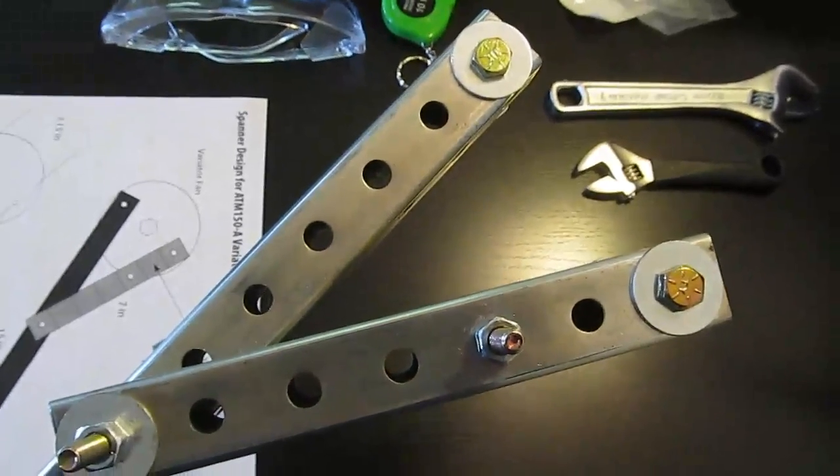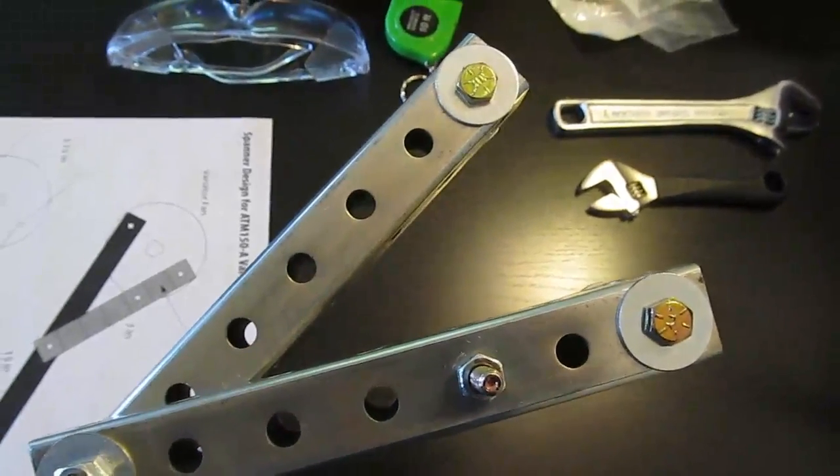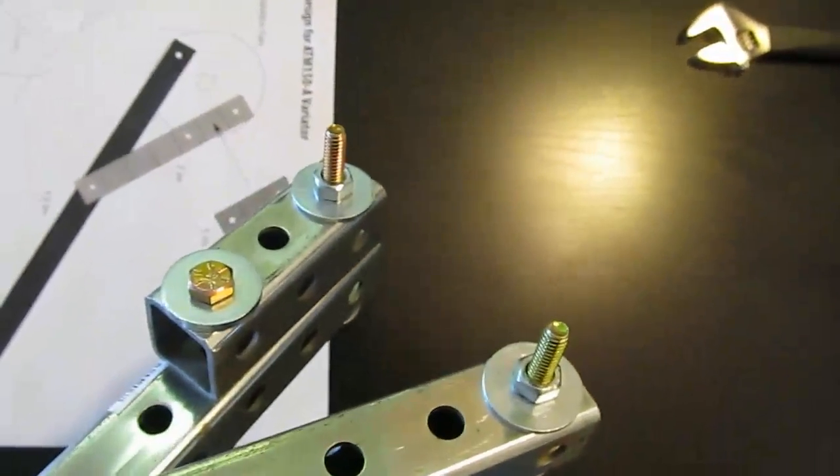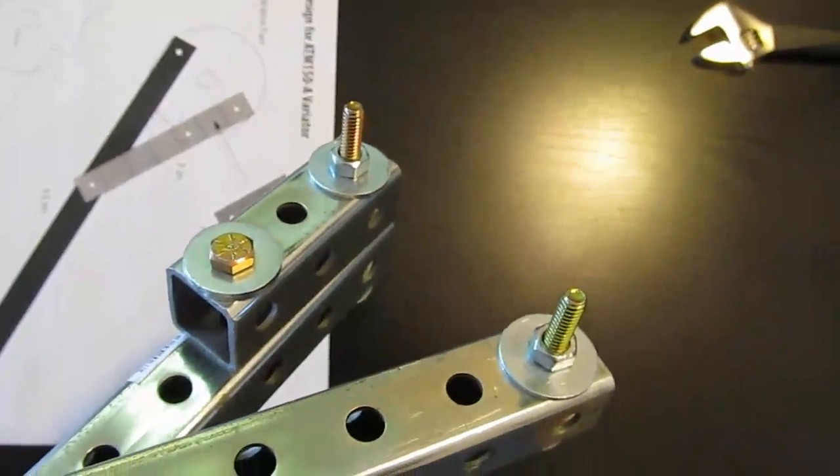This is the side that will face outward away from the CVT. And this is the side that will be inserted into the variator fan.